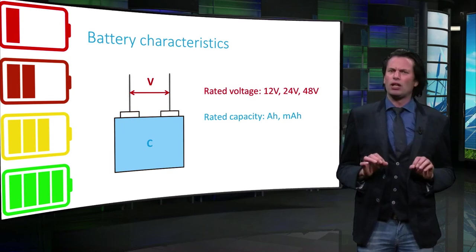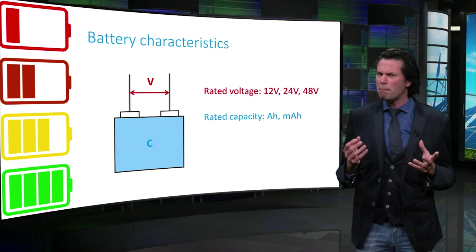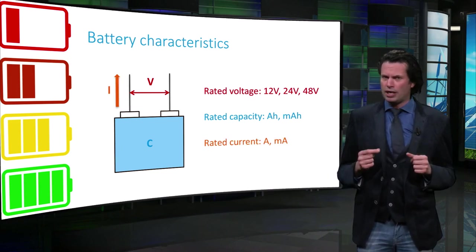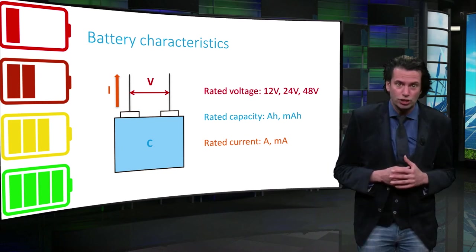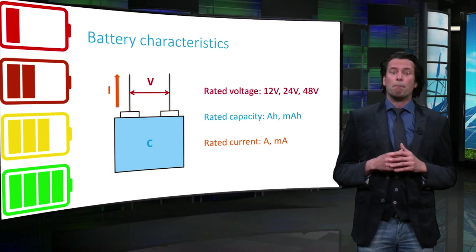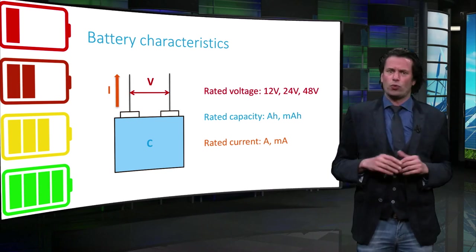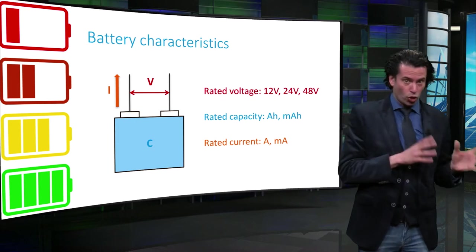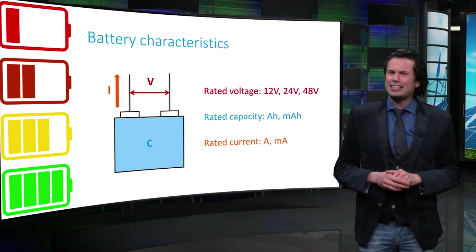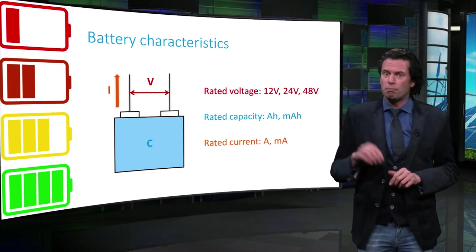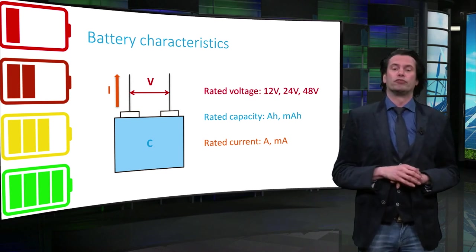It's good to recollect from high school physics that the amount of charge is usually measured in coulombs. As the electric current is defined as the flow rate of electrical charge, the charge can also be measured in amp-hours. Therefore, we can quantify charge in both coulombs or amp-hours. But we will stick to the more convenient unit of amp-hours for measuring the battery capacity.